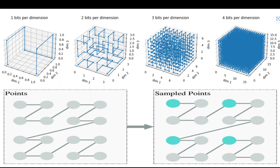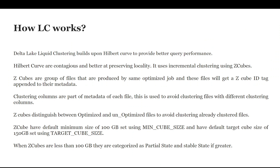As you increase dimensions, the co-locality preservation issue with the Z-order curve worsens because of the nature of the curve. But when you look at the Hilbert curve, it goes in a pretty much H-shape pattern. The Hilbert curve does not have co-locality issues — similar data can be stored closely across different dimensions. Liquid clustering is specifically built on top of the Hilbert curve, so as you increase bits per dimension, the data is highly co-located together.